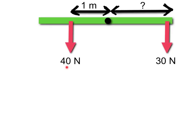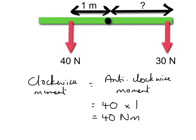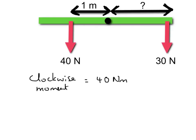Let's work out the anticlockwise moment first. The clockwise moment is going to be equal to the anticlockwise moment. That anticlockwise moment is equal to the 40 newton force times its distance from the pivot, so that will be 40 newton metres. Our clockwise moment must also be equal to 40 newton metres, and it will equal the 30 newtons times the unknown distance — let's call that distance x.